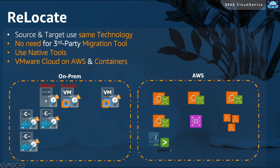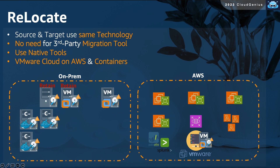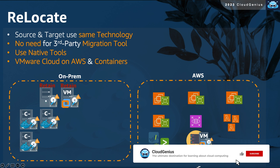The last strategy to discuss is the relocate strategy. In this case, the source and target environments run the same typical technologies, making it very easy to move the workload without needing a migration tool or any conversion — just use native tools to copy and move the workload. The first popular example is VMware Cloud on AWS, where you get physical servers on top of AWS running VMware ESXi, allowing your VMware virtual machines to run on AWS. With proper integration between your on-premises VMware environment and AWS, you can use VMware vMotion capability to relocate the virtual machines.